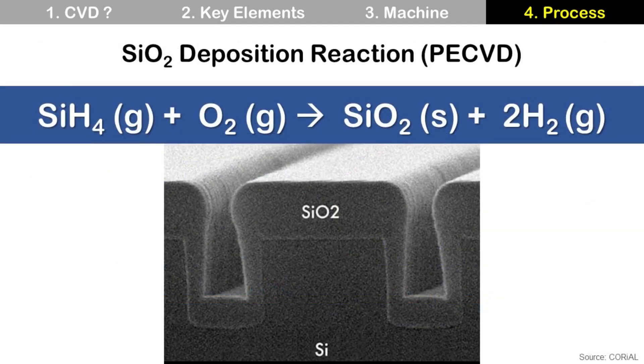For silicon dioxide deposition in PECVD, we have silane gas and oxygen gas. With energy from heat and plasma, silane and oxygen gas turn into solid silicon dioxide film and hydrogen gas. So, silicon dioxide deposition is made.